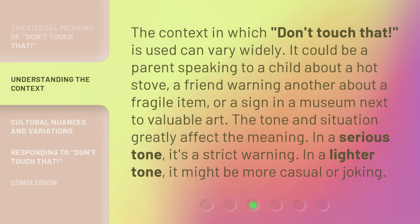The context in which 'don't touch that' is used can vary widely. It could be a parent speaking to a child about a hot stove, a friend warning another about a fragile item, or a sign in a museum next to valuable art. The tone and situation greatly affect the meaning. In a serious tone, it's a strict warning. In a lighter tone, it might be more casual or joking.